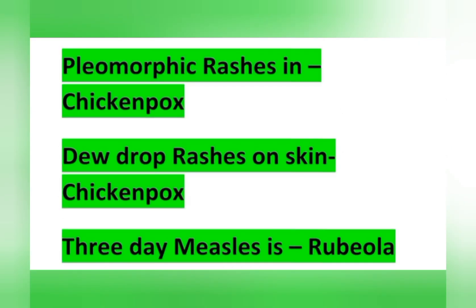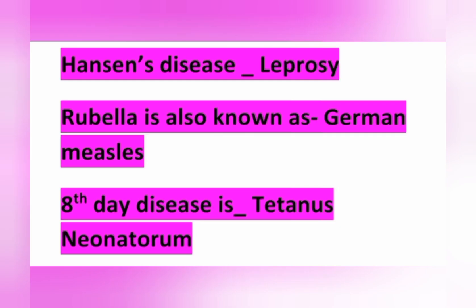Pleomorphic rashes and dewdrop rashes on the skin are seen in chickenpox. 3-day measles is also known as rubella, or German measles. Hansen's disease is also known as leprosy. The eighth-day disease is known as tetanus neonatorum.